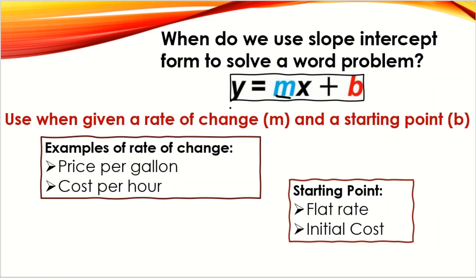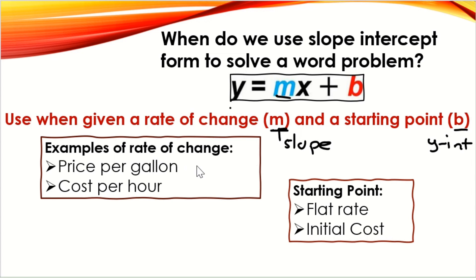So when exactly do we use slope-intercept form to solve word problems? We use it when we're given a rate of change, which is our m — and remember, m is your slope. We also need a starting point, which is our b, or our y-intercept if we were graphing. Your starting point would be a flat rate or an initial cost — something that does not change.